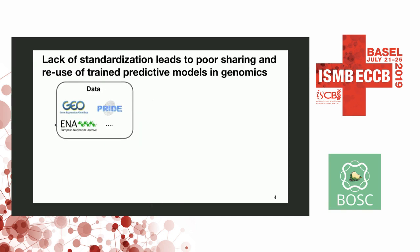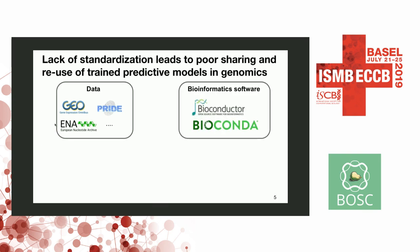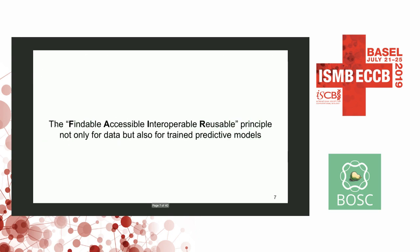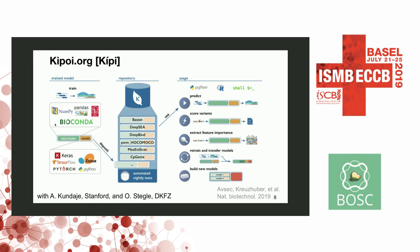The field of omics has been extremely good in sharing data. The FAIR data principles, as a field we can be proud of, have been implemented very nicely. There are also very nice efforts in standardizing software through open projects such as Bioconductor and Bioconda. But when it comes to trained predictive models, we are not really there yet — those models are usually shared in code repositories of individual groups, sometimes on paper supplements or maintenance web pages. The starting point of our project was to apply FAIR principles to this particular class of software: trained predictive models.